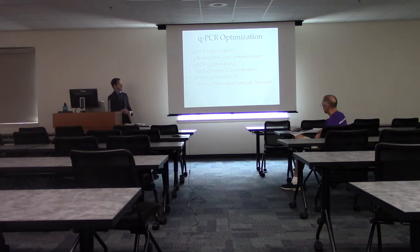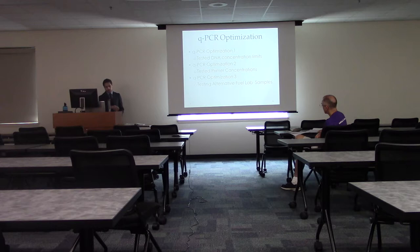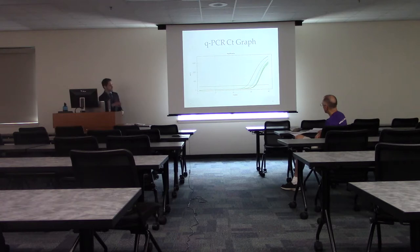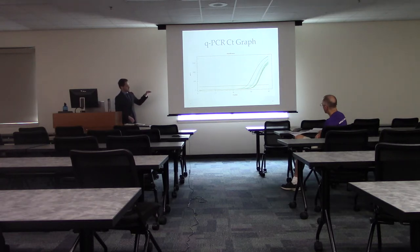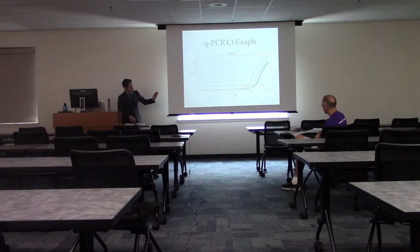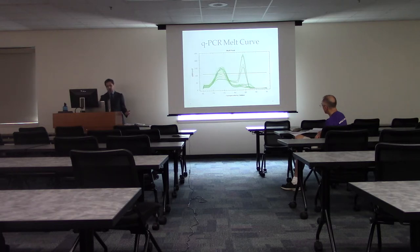For QPCR I tested DNA concentration limits, primer concentrations again, and then samples from the alternative fuel lab. The dilution series graph shows that the more DNA I started with, the sooner it reaches the arbitrary threshold. The first set of lines on the left was a 1:10 dilution, then 1:100, 1:1000, 1:10,000, and 1:100,000 — the last dilutions were practically indistinguishable from the negative controls which had no DNA.